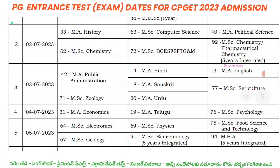For the 2nd June 2023, the exams conducted include MA History, MSc Chemistry, MSc Computer Science, and various subject combinations. MA Political Science and MSc Chemistry are also included. This is also a 5-year integrated course, and these subjects are conducted on 2nd July 2023.